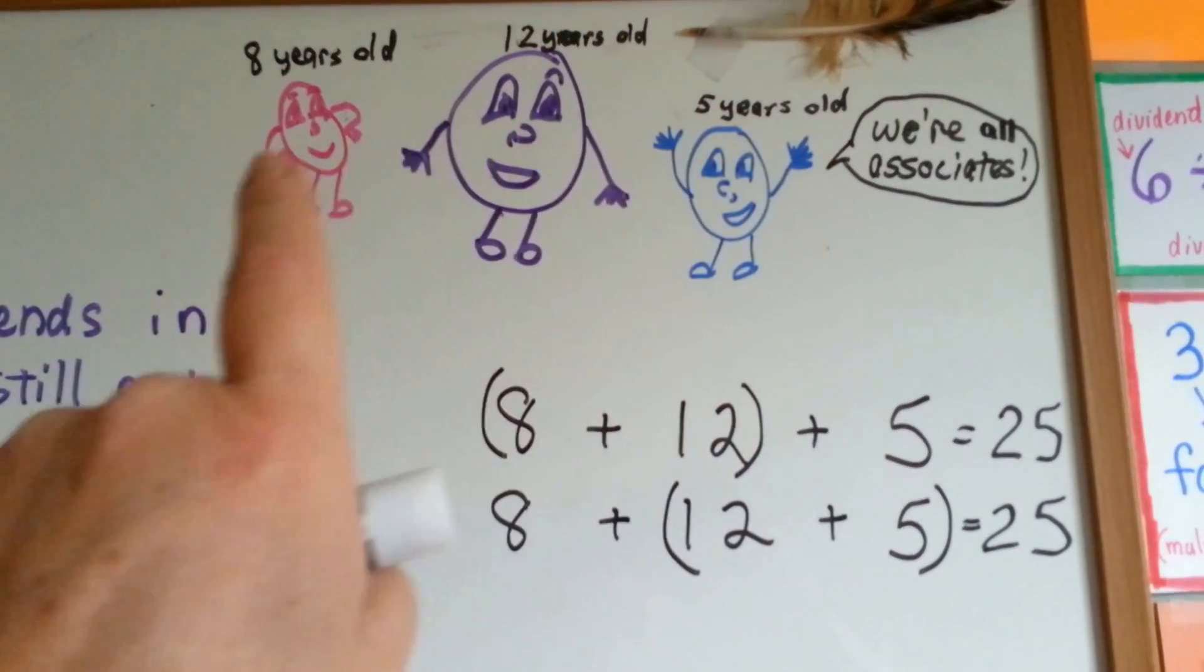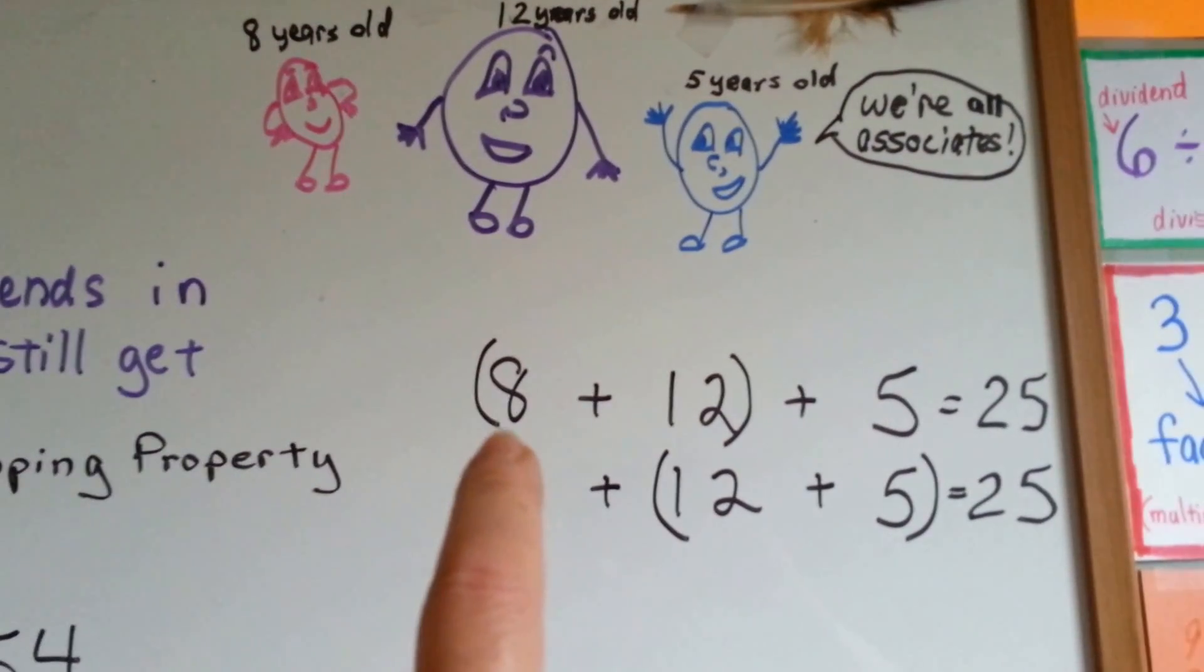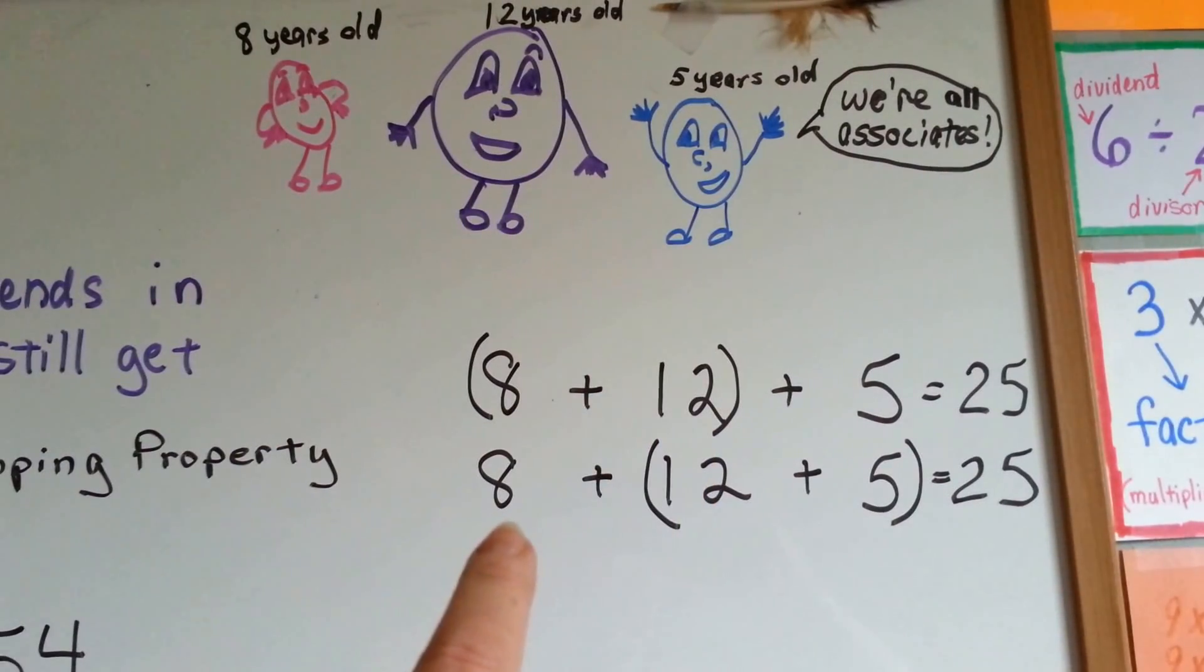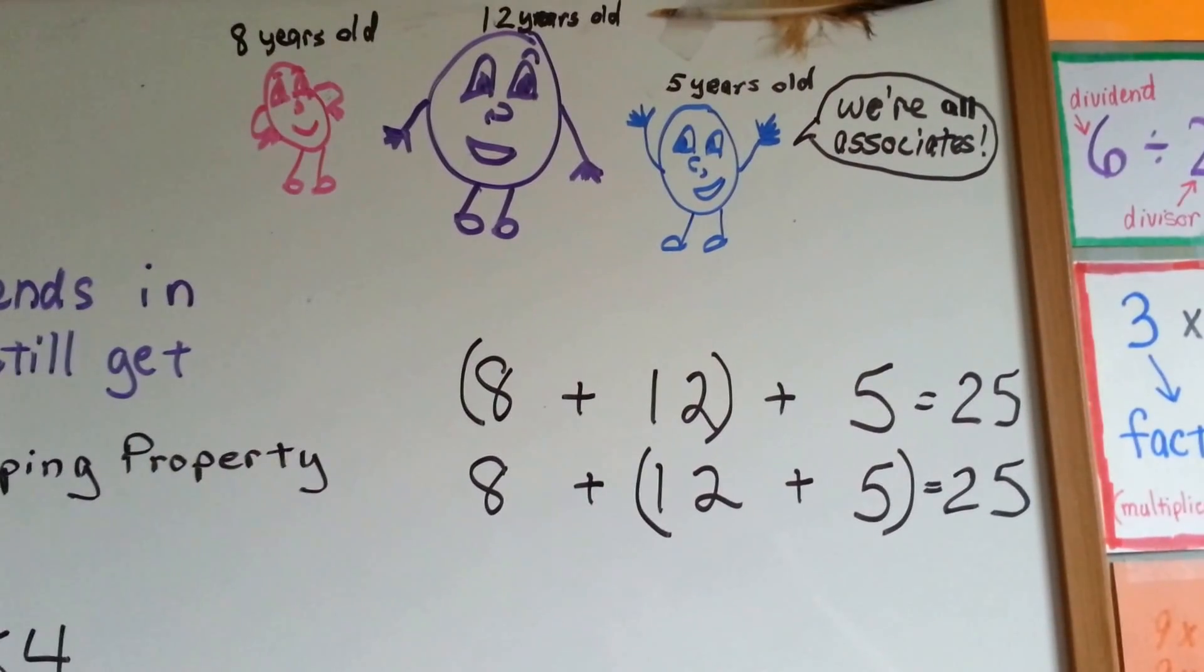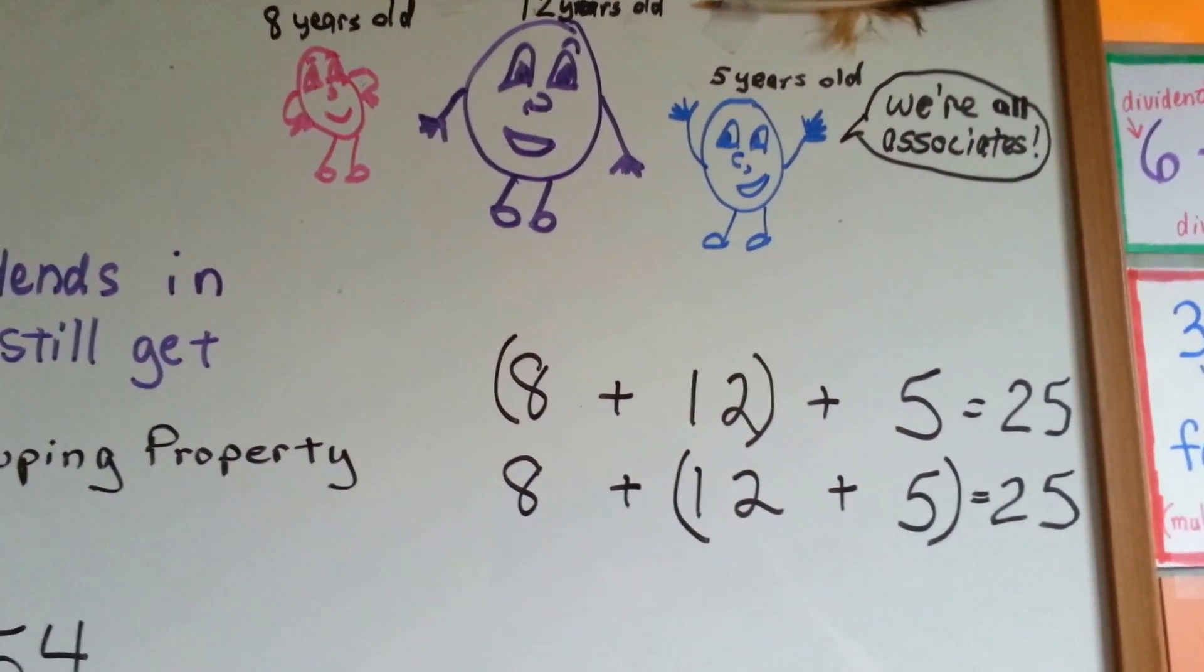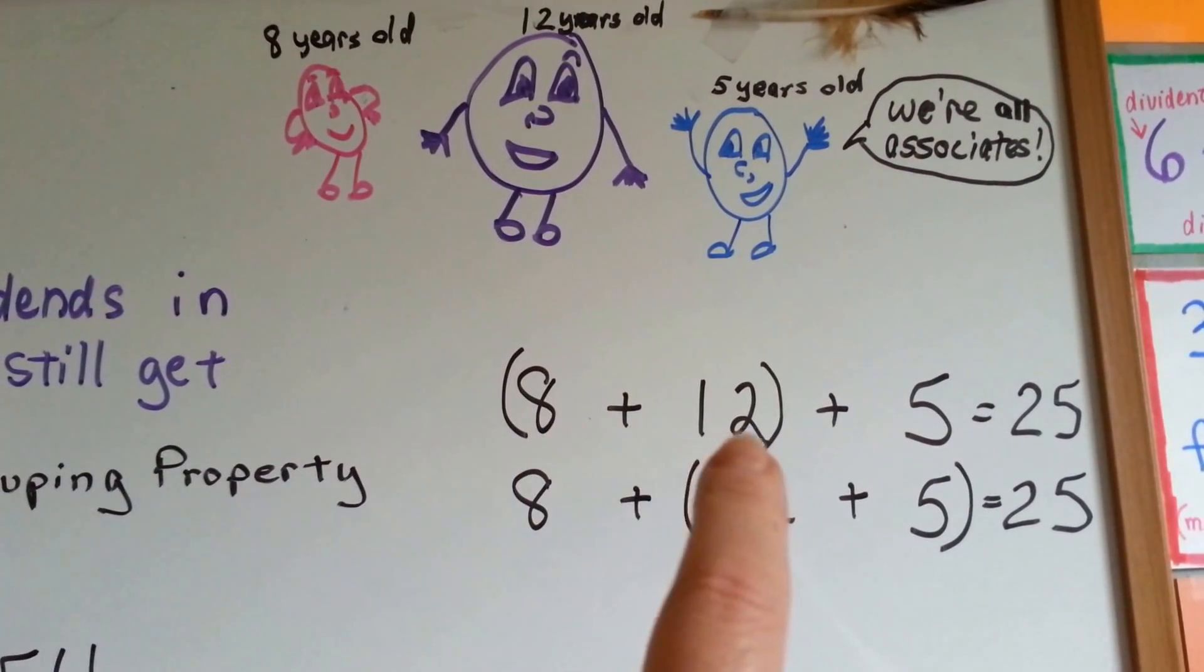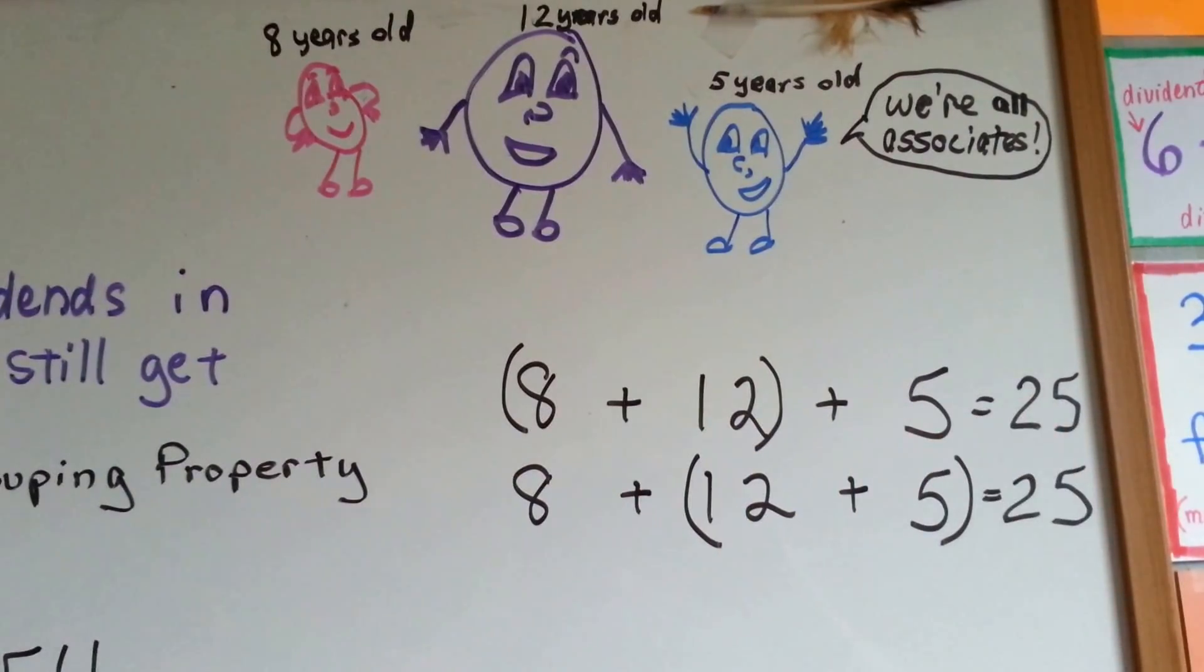If this is their ages and you added up their total ages, you could say 8 plus 12 plus 5 or you could say 12 plus 5 and then add the 8 last because you do what's in the parentheses first. Which way would be easier to add? Now if you remember compatible numbers from our other video, adding the 12 and the 8 together first would be the easiest because 2 and 8 is 10 and that 10 makes it 20. Then you just add the 5 and get 25.